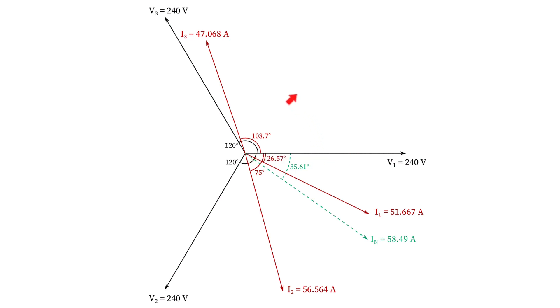The horizontal is zero degrees. Any positive angle goes upwards from that starting point and any negative angle downwards from that horizontal. We have our three currents which are marked on here, I1, I2 and I3, but I've also marked on in this dotted green line here our neutral current which was 58.49 amps at an angle of minus 35.61 degrees.